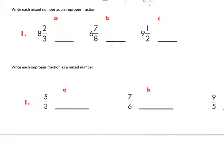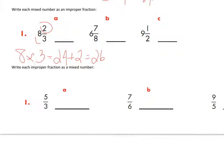Alright, let's check. I'm going to start with the math way. I'm going to go eight times three because that's eight groups of three, which is 24, plus that two makes it 26. So it would be 26 thirds because that bottom number stays the same.